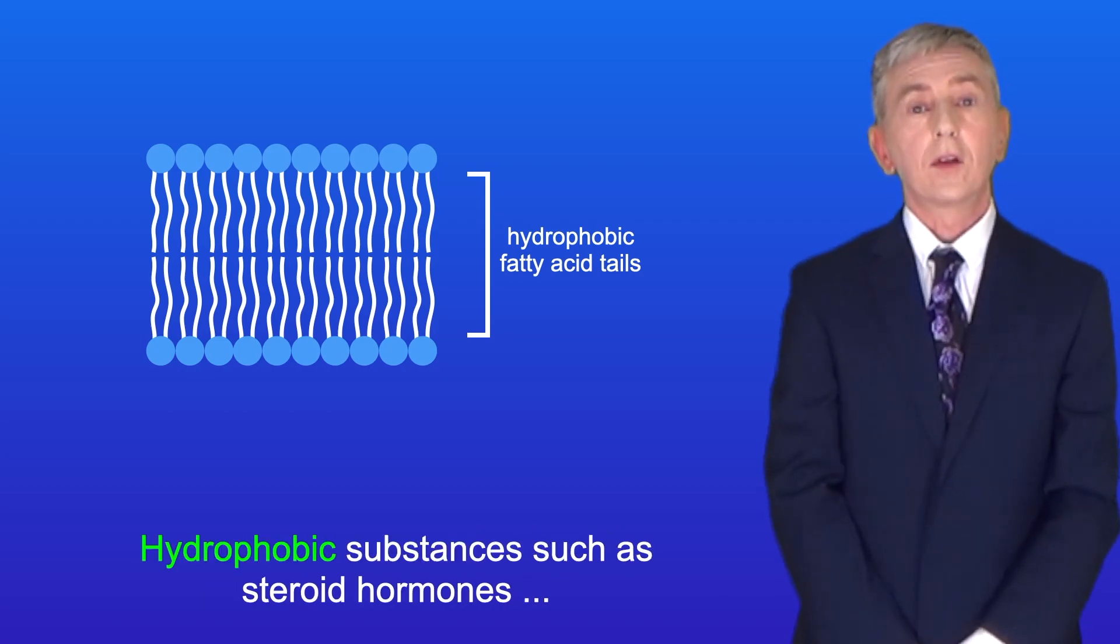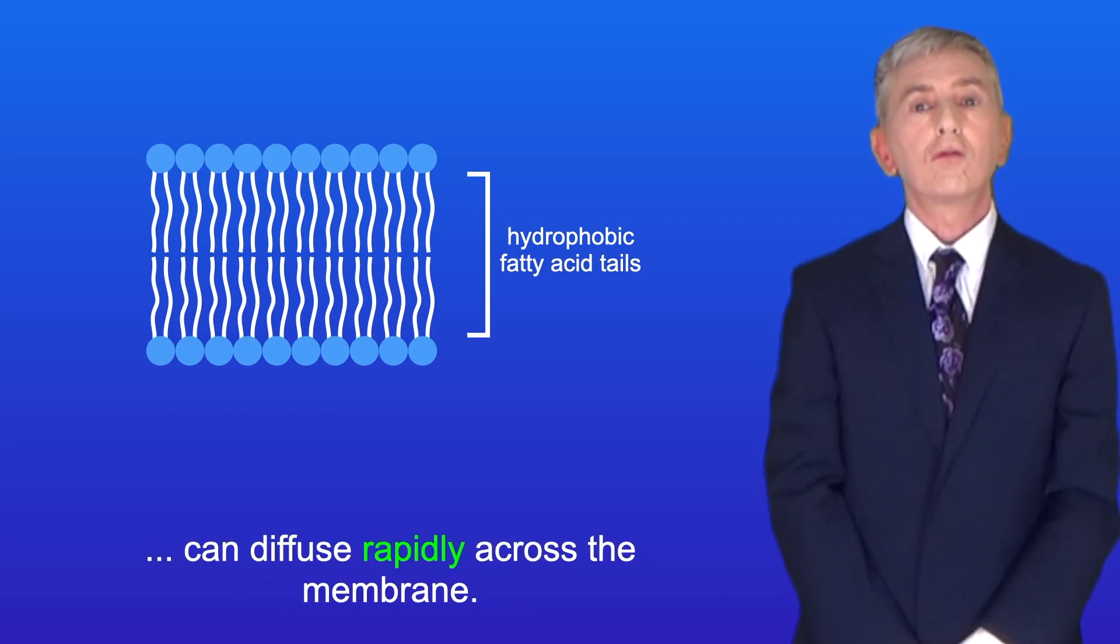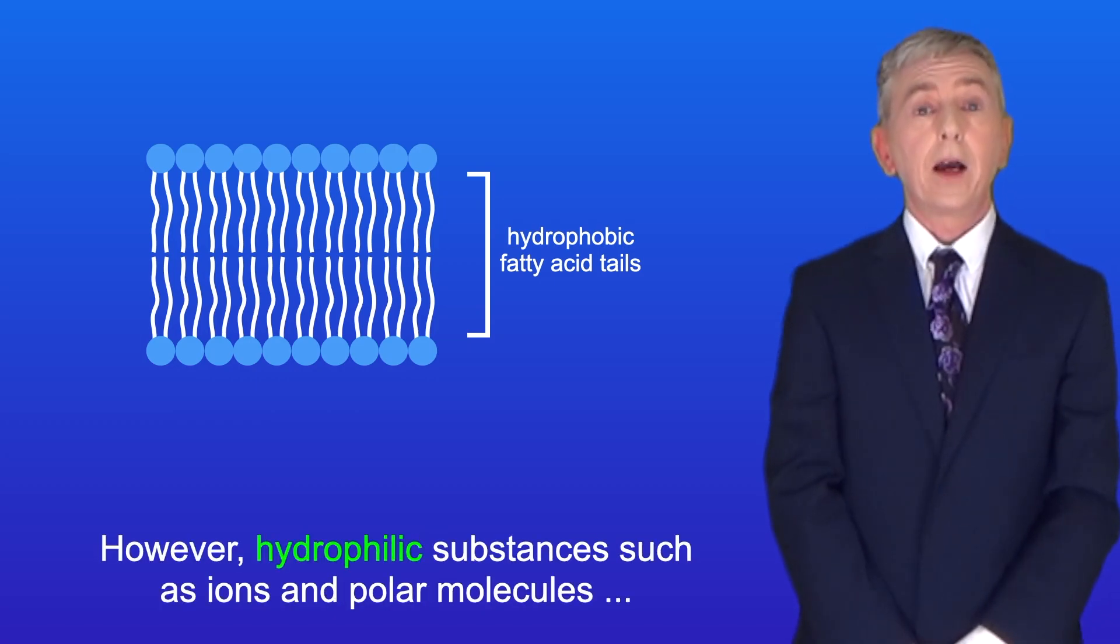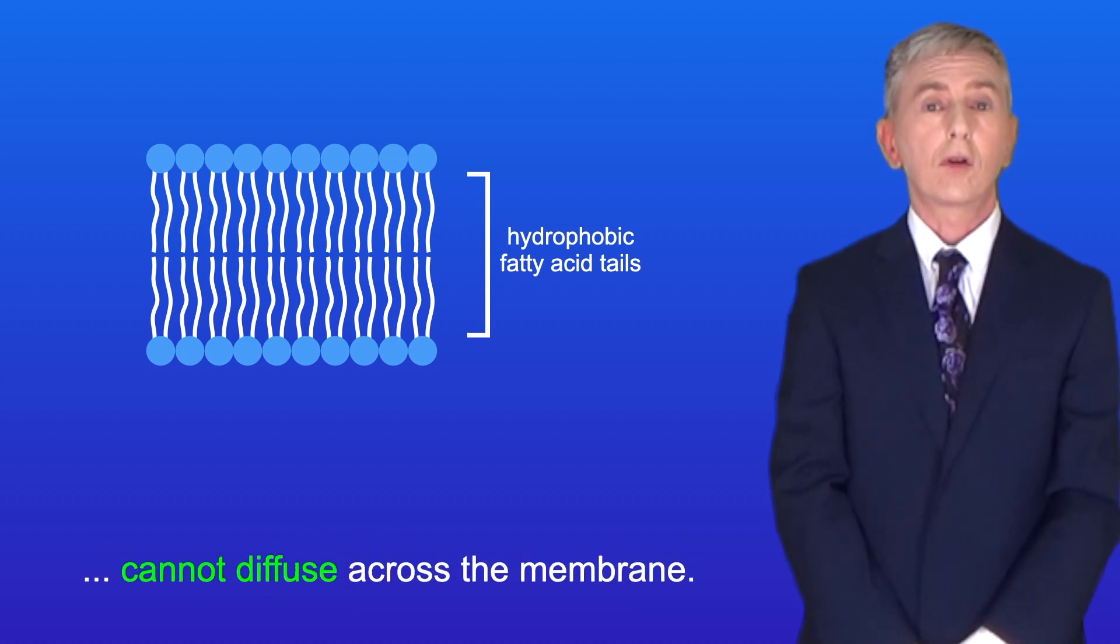Hydrophobic substances, such as steroid hormones, can diffuse rapidly across the membrane. However, hydrophilic substances, such as ions and polar molecules, cannot diffuse across the membrane.